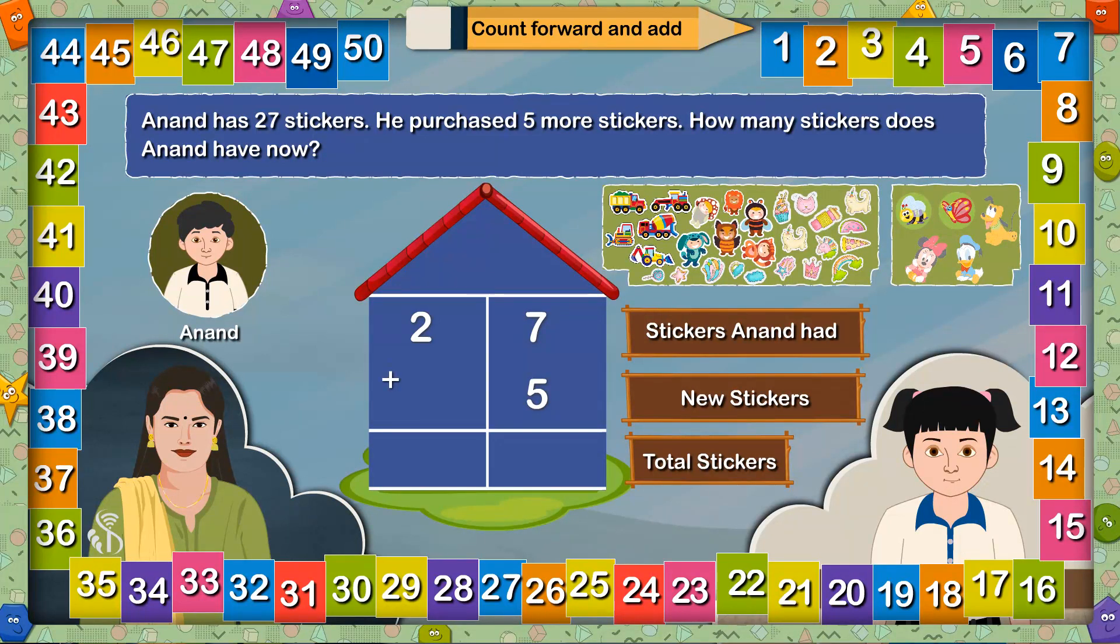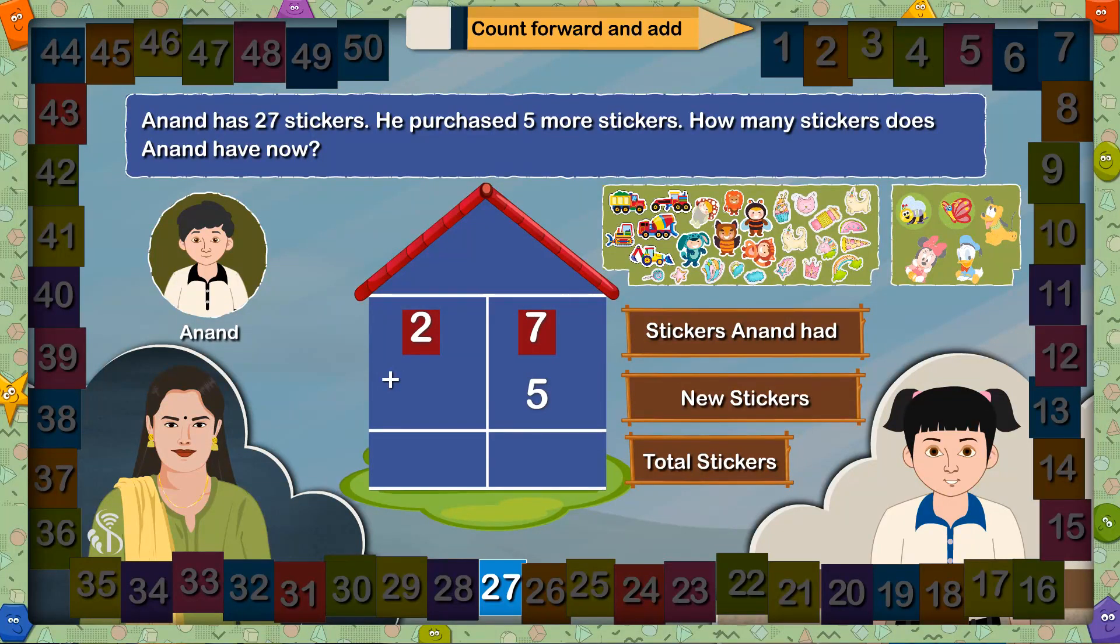Addition. Correct. Carry out the addition. Madam, 27 is a bigger number here, so I will count 5 digits forward from 27: 28, 29, 30, 31, 32. This means 27 plus 5 equals 32. I will write 32 in the answer square.